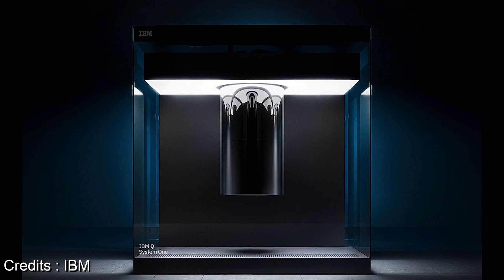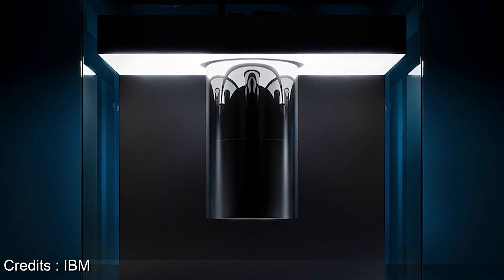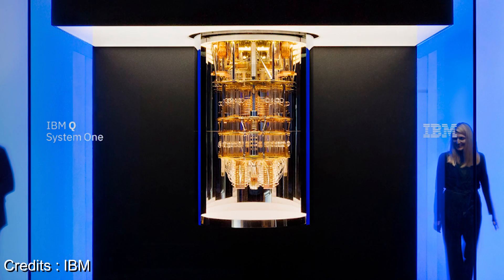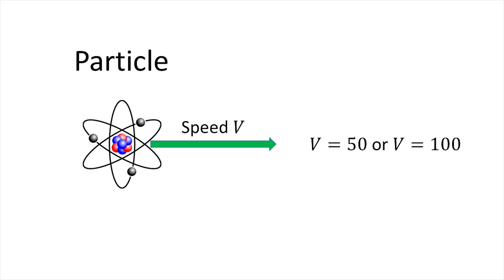To understand why a quantum computer does not work, we need to understand how it works. Imagine a particle that can have either a speed of 50 or a speed of 100. We will refer to the speed of the particle as a state. This particle can be in the state of speed 50, or in the state of speed 100. And we denote the state with this bracket.